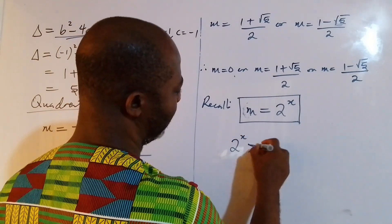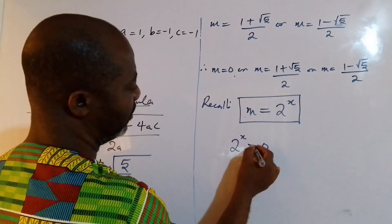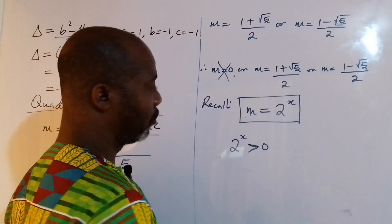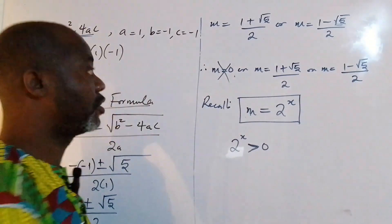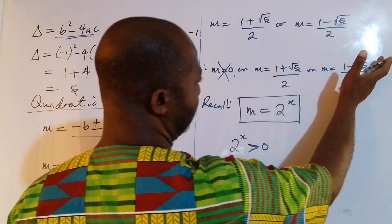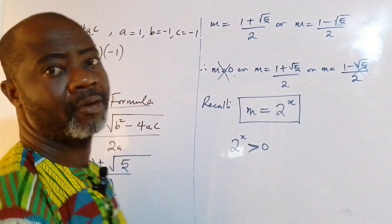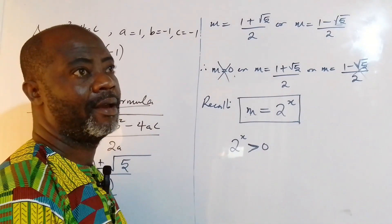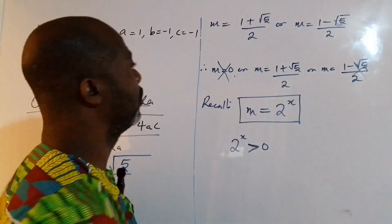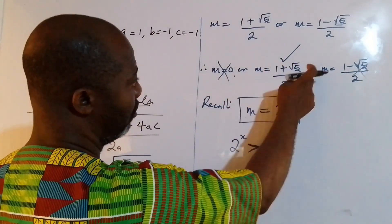Since 2 to the power of x must be greater than 0, we examine each solution. m equal to 0 is not valid — there is no solution for x if m is 0. And m equal to 1 minus root 5 over 2 is less than zero, which is also invalid. So those two solutions are rejected, leaving us with just one valid solution: m equal to 1 plus root 5 over 2.